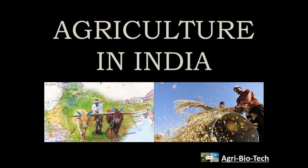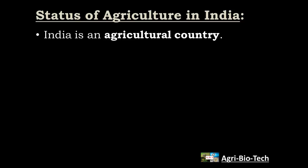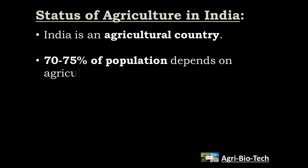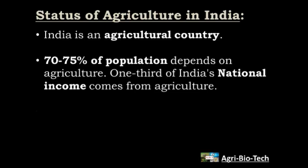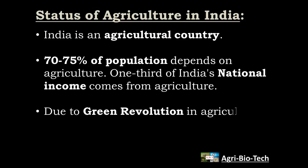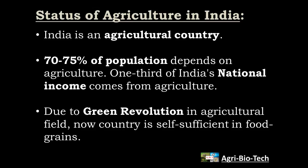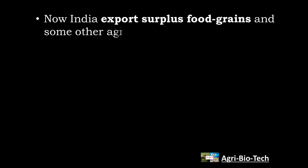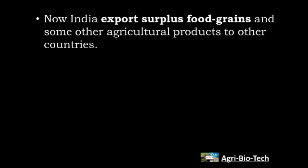Now, status of agriculture in India. India is an agricultural country. About 70% of population depends on agriculture. One third of India's national income comes from agriculture. Indian economy is based on agriculture. Indian agriculture remained underdeveloped for a long time. They did not produce enough food for their people. But after green revolution in agricultural field, now the country is self-sufficient in food grains. It is now in a position to export surplus food grains and some other agricultural products to other countries. Hence, the green revolution is a major revolution in the field of agriculture in India.